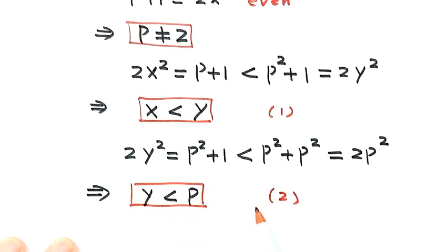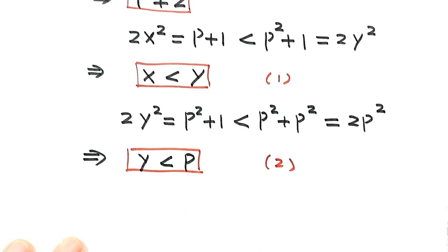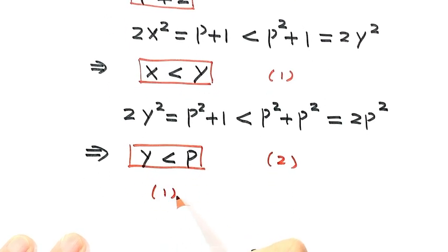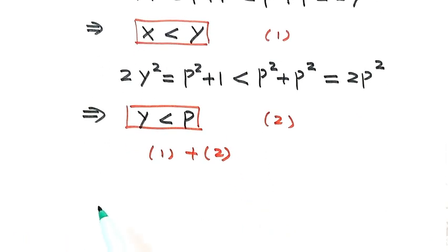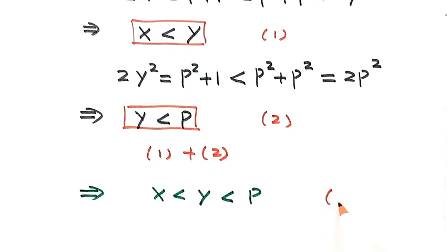Combining Result 1 and Result 2: we have x less than y, and y less than p. So altogether, x is less than y, which is less than p. We label this Result 3.